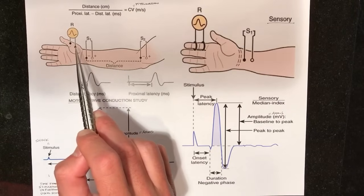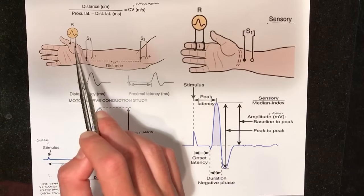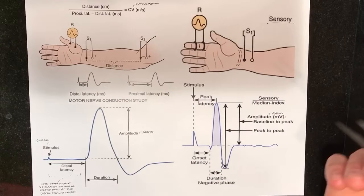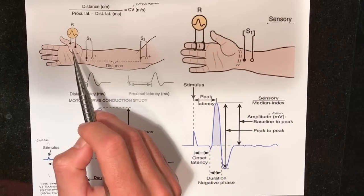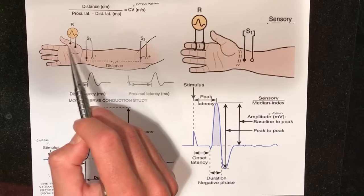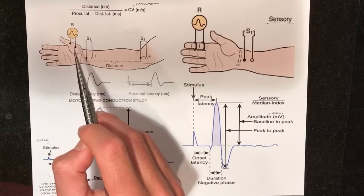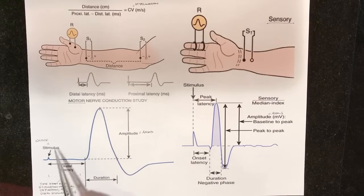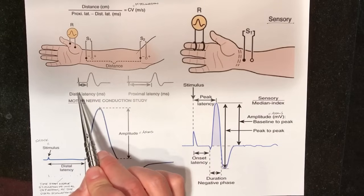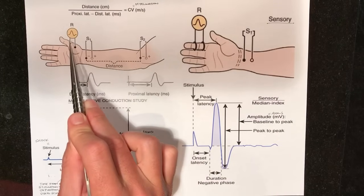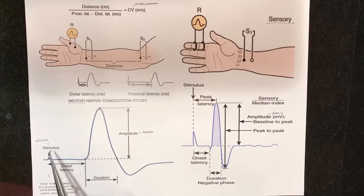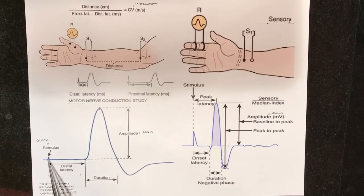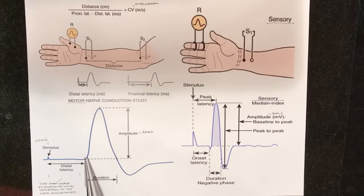There's a recording electrode that records the depolarization of whatever muscle you're looking at, because it's a motor nerve conduction study. In this case, this is a median nerve study — we're looking at the abductor pollicis brevis muscle, with an electrode sitting on top of the skin overlying this muscle. When you stimulate at S1, the distal site, you shock the person and record over the muscle. From the time you give that shock to the initial deflection at the recording electrode from the muscle depolarization — that is distal latency.